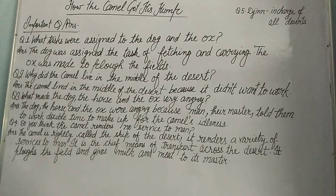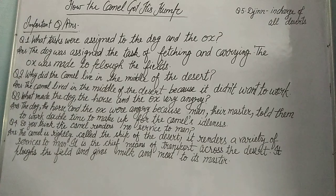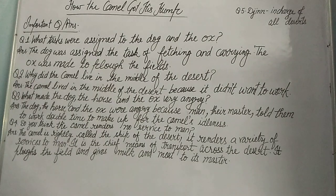Question number three: what made the dog, the horse, and the ox very angry? Yeh jo tine animal the, woh camel ke paas gae the, aur camel ne unhe kaam mein help karne se, support karne se manah kar diya tha. To unhe angry ho gaya tha — unhe gussa aa gaya tha.